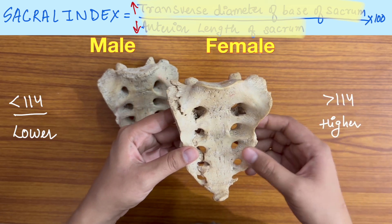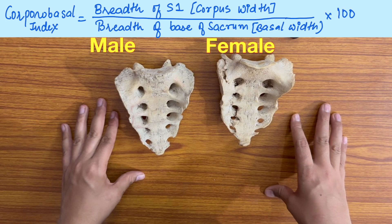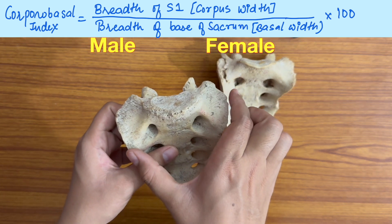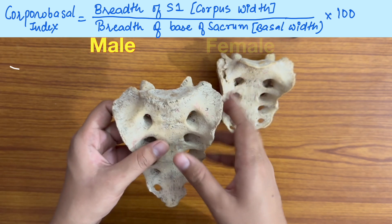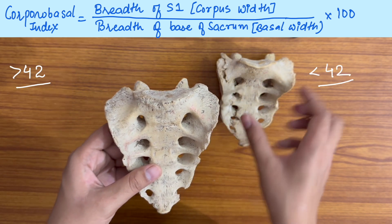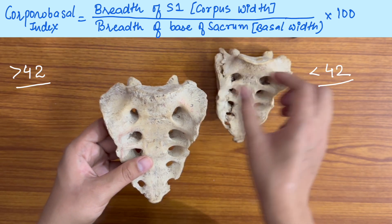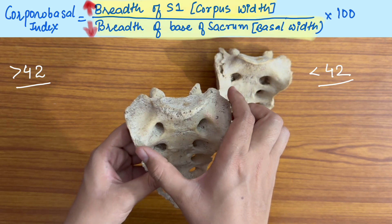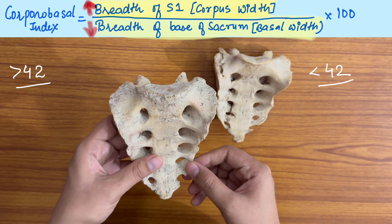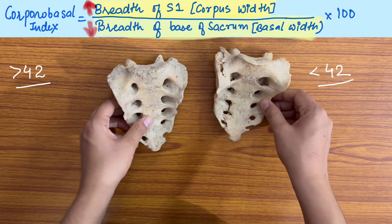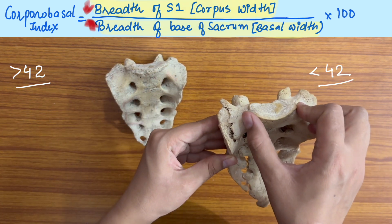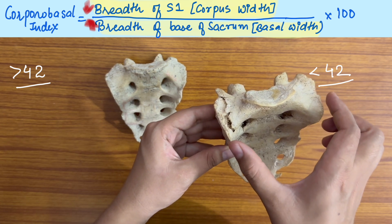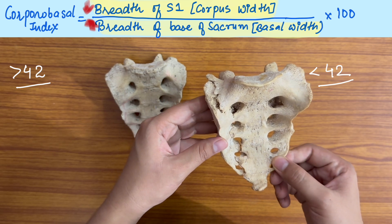The second index is the corporal basal index — that is the breadth of the body of the first sacral vertebra (corpus width) divided by the breadth of the base of the sacrum (basal width), multiplied by 100. It is more than 42 in the male and less than 42 in the female. Since S1 breadth is more in the male and the base width is smaller due to a narrower sacrum, the numerator is more and the denominator less — hence this index is higher in the male. In the female, S1 breadth is smaller and base width is more, making this index lower in the female.